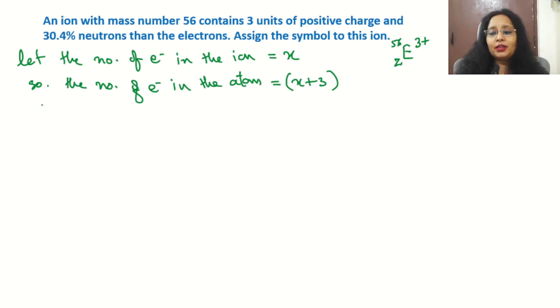Now, because we know that the number of electrons in the atom is the same value as the number of protons, so the number of protons in the atom or the number of electrons in the atom is equal to x plus 3.